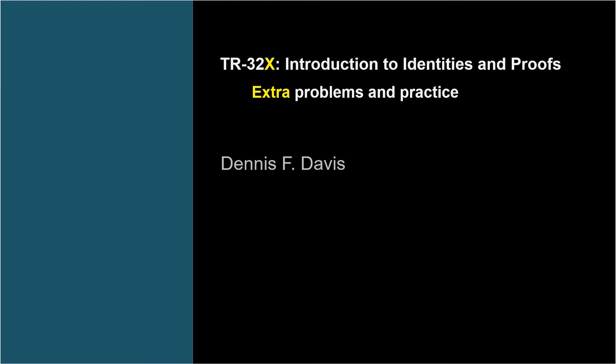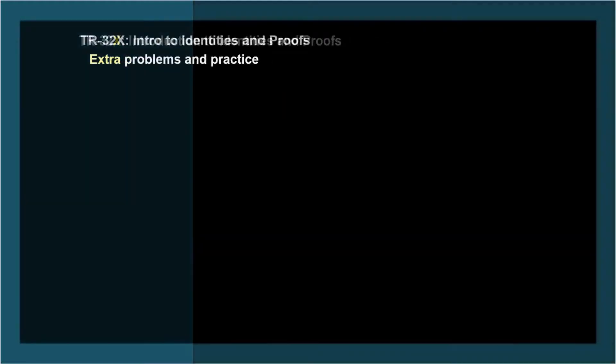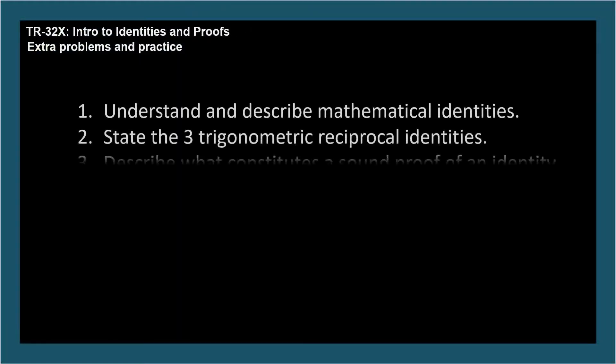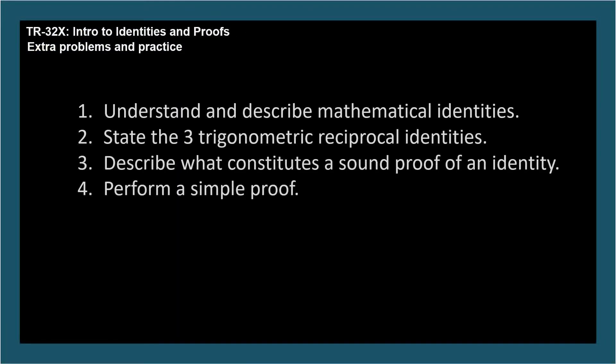The learning objectives for TR-32 are understand and describe mathematical identities, state the three trigonometric reciprocal identities, describe what constitutes a sound proof of an identity, and perform a simple proof.